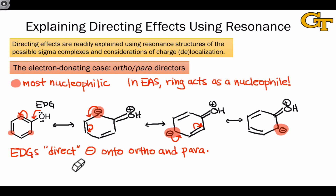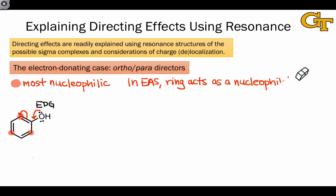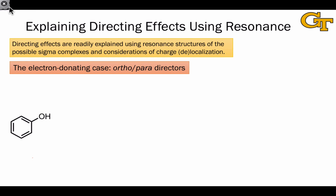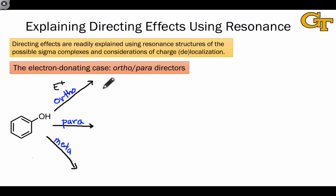An equivalent way to think about this comes from considering the sigma complexes that result from substituting at various positions. Rather than considering resonance in the starting compound, let's consider the nature of the sigma complexes generated when we add an electrophile at the ortho, meta, and para positions. I'm going to write ortho and para next to each other since we'll find these both lead to relatively stable sigma complexes, and put meta at the bottom. Now I'm going to draw all the resonance structures of the possible sigma complexes — you should take some time to draw these on your own.